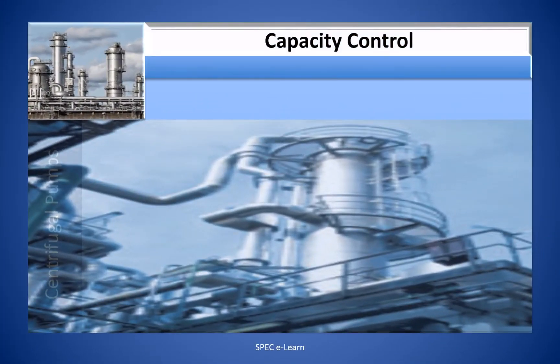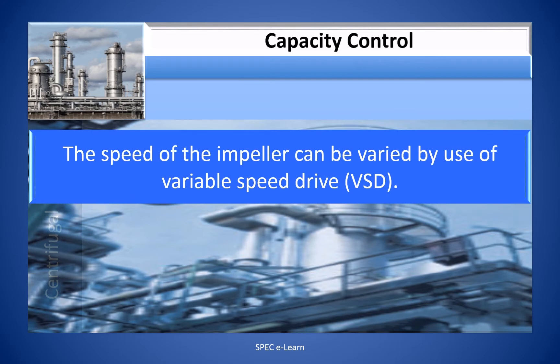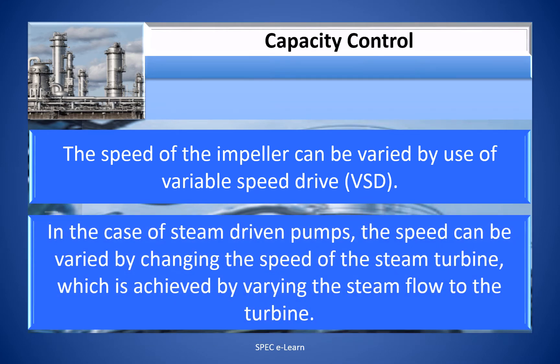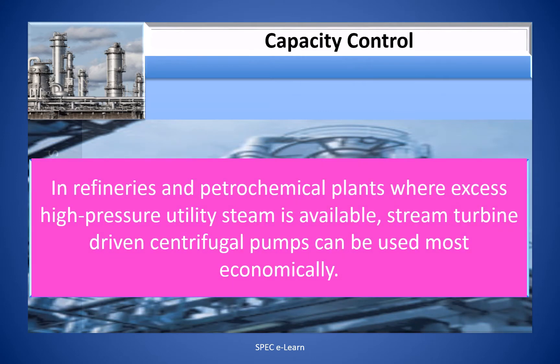The speed of the impeller can be varied by use of a variable speed drive. In the case of steam-driven pumps, the speed can be varied by changing the speed of the steam turbine, which is achieved by varying the steam flow to the turbine. In refineries and petrochemical plants where excess high-pressure utility steam is available, steam turbine-driven centrifugal pumps can be used most economically.